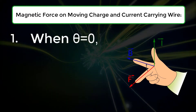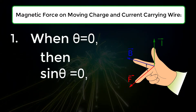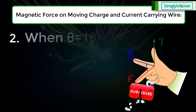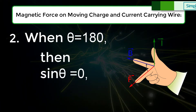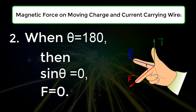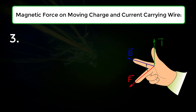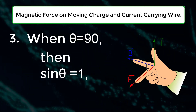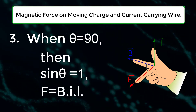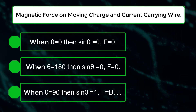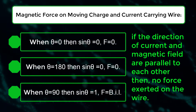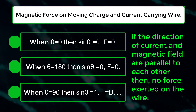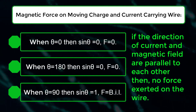Case 1: When theta is equal to 0, then sin theta is 0, so F is 0. Case 2: When theta is equal to 180, then sin theta is equal to 0, so F is equal to 0. Case 3: When theta is equal to 90, then sin theta is equal to 1, so F is equal to BIL. We can say that if the direction of current and magnetic field are parallel to each other, then no force is exerted on the wire.